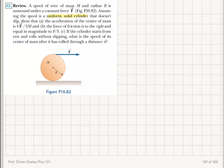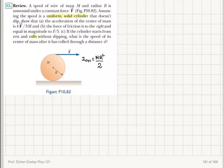For a uniform solid cylinder, the moment of inertia for rotations about an axis through the center of mass is MR² over 2. Now, there is a force of friction, but what is its nature? Since it is rolling without slipping, rolling without slipping implies static friction.